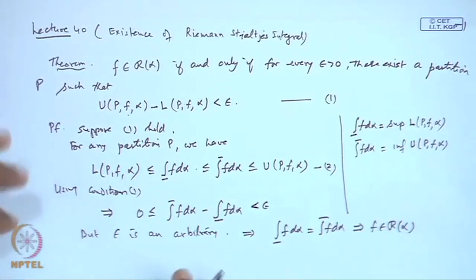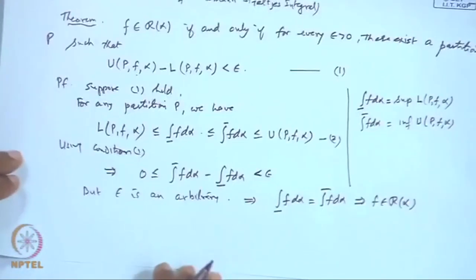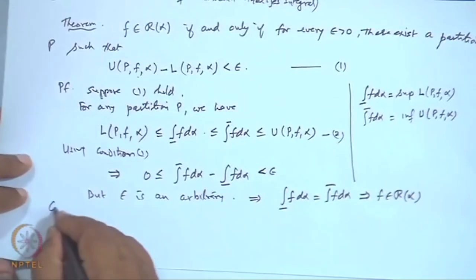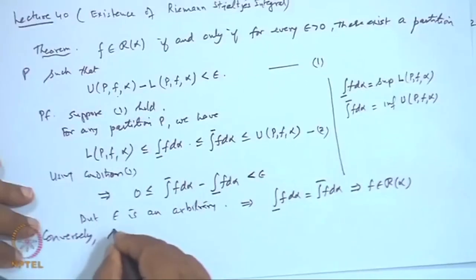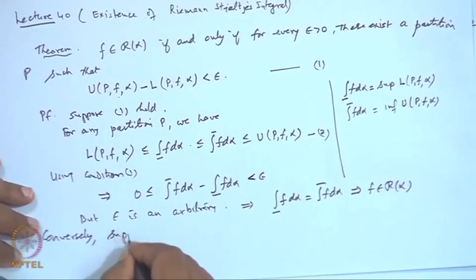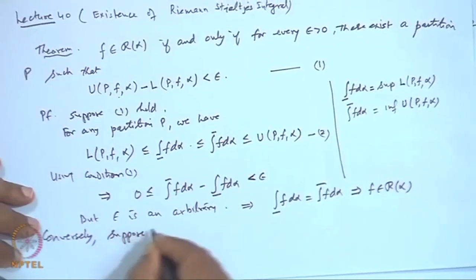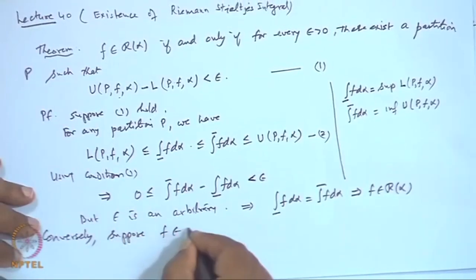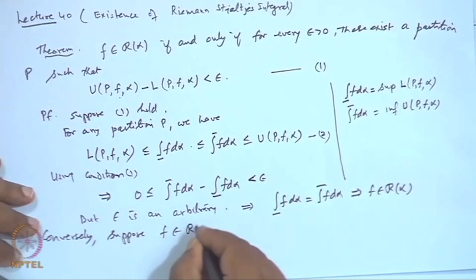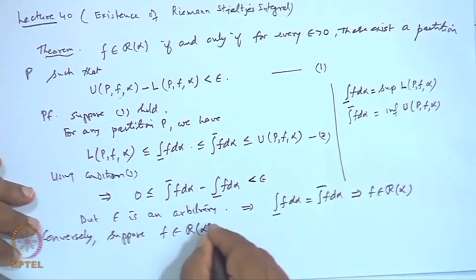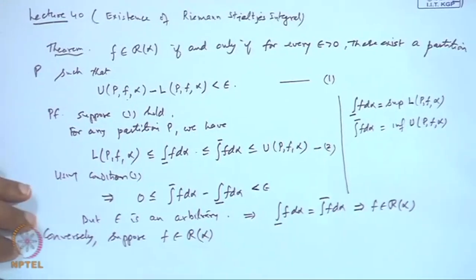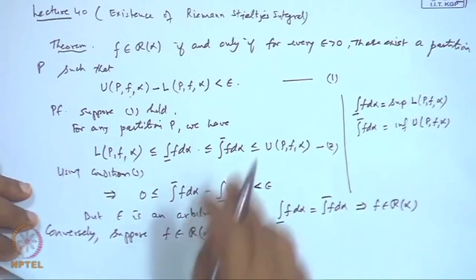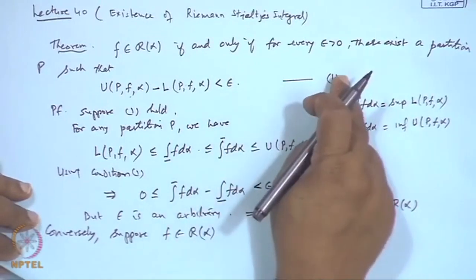Once the lower and upper integrals coincide, this implies f belongs to the class R(α) of Riemann-Stieltjes integrable functions. Conversely, suppose f belongs to the class of Riemann-Stieltjes integrable functions; then we have to show that Condition 1 holds.